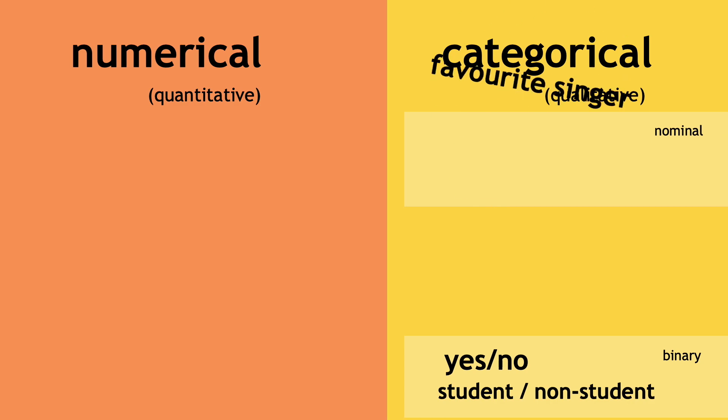Then nominal variables are where we might have a number of different choices, like favorite animal or singer or nationality. But we can also have what are called ordinal variables.